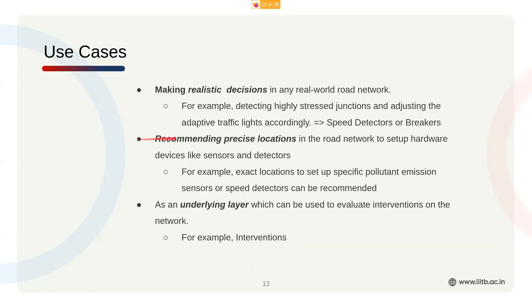We can also recommend precise locations in the road network for things like speed detectors or speed breakers. More importantly, we can use this as an underlying layer for research — we have a few metrics and a few interventions, so if you make a new intervention, you can run these metrics on it and see how it changes.